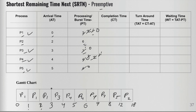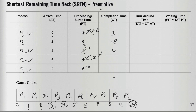Now let's calculate the completion times. P1 completed at time three, P2 at eighteen, P3 at four, P4 at eight, and P5 at twelve. Turnaround time (TAT) is CT minus arrival time: P1 = 3−0 = 3, P2 = 18−2 = 16, P3 = 4−3 = 1, P4 = 8−4 = 4, P5 = 12−5 = 7.